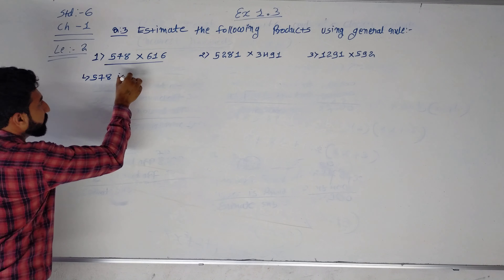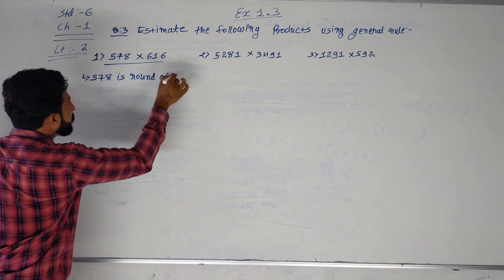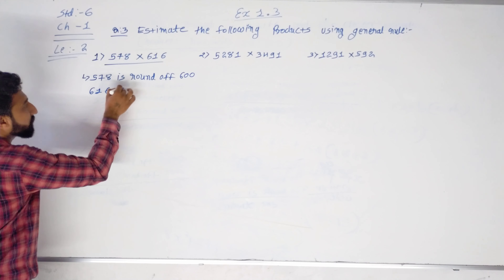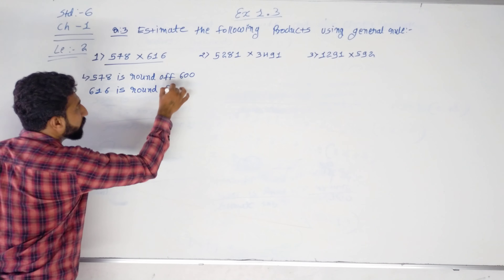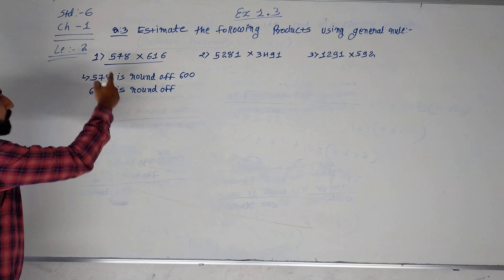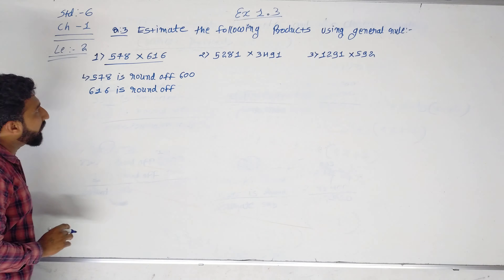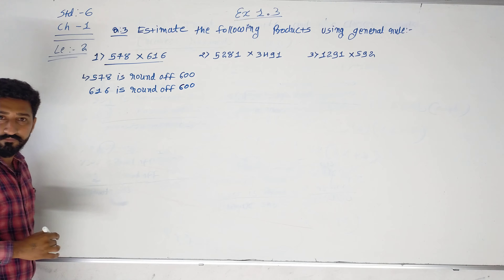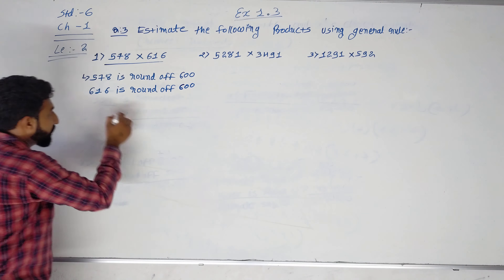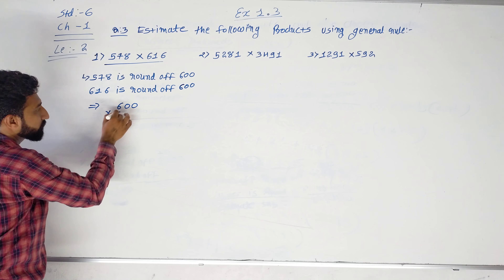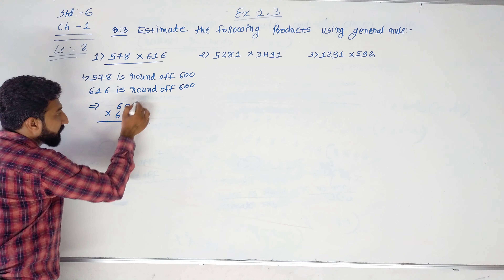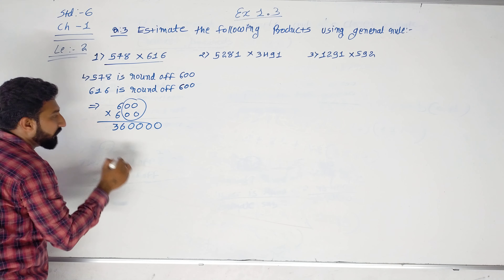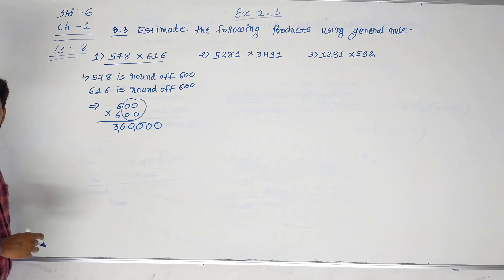578 is round of value 600. And 660 is round of — 578 becomes 600, and 660 also becomes 600. So what is the multiplication of 600 multiplied by 600? 600 times 600 — 6 times 6 is 36 — this is the estimate product.